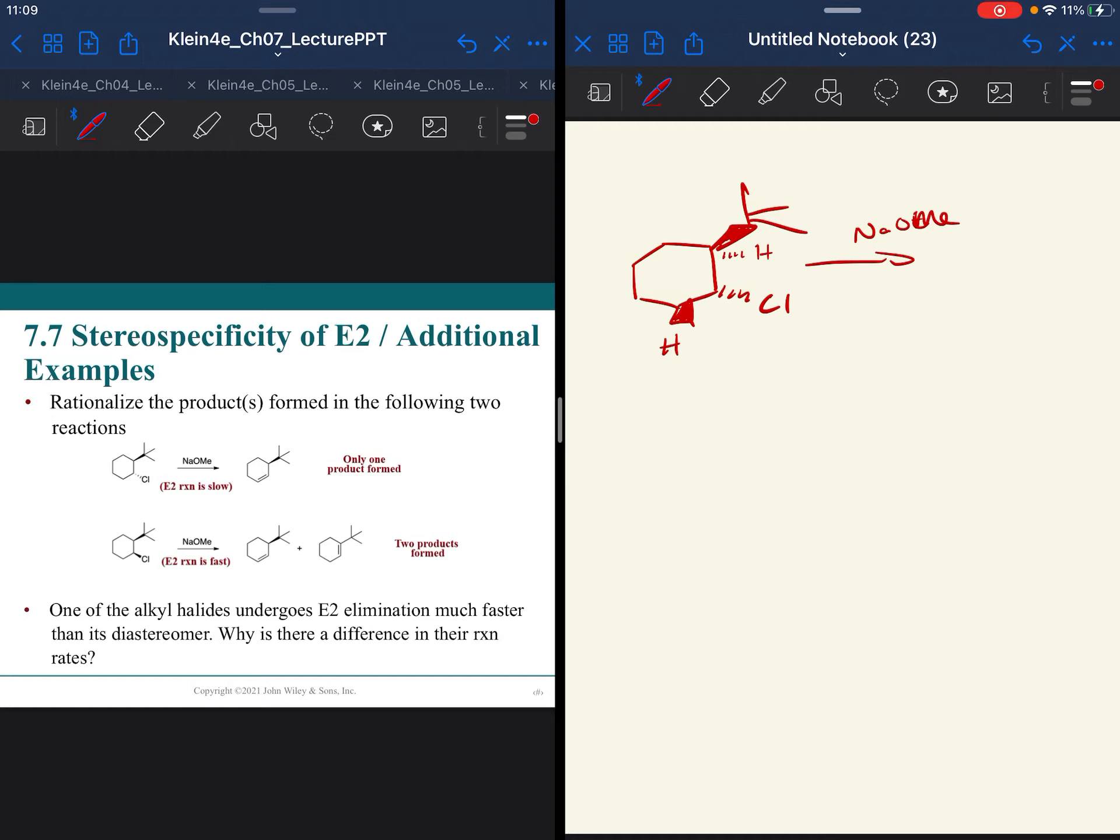and Zaitsev would typically be preferred third, in this case, because we have a ring, because it's locked into place, and because E2 is anti-periplanar, meaning that both of the things that are leaving need to be anti to one another, this is going to be the proton that is removed. That's why we get that Hofmann product.